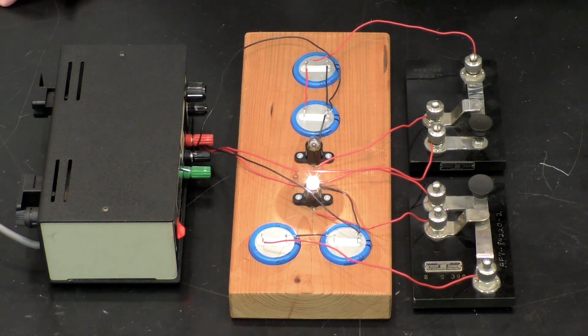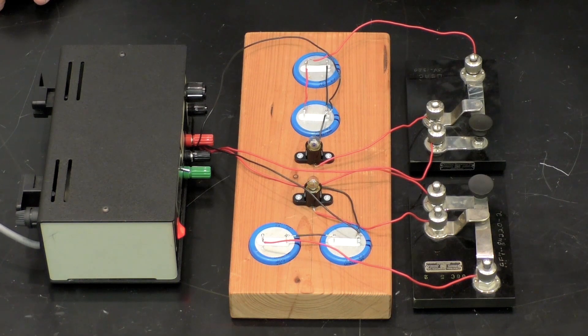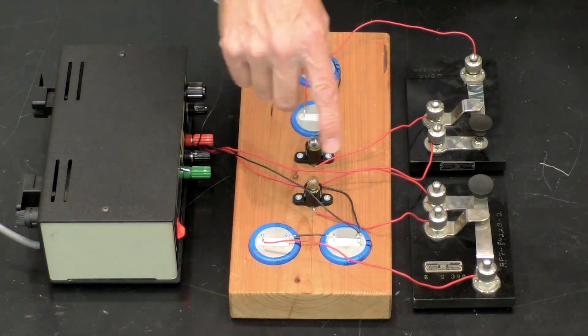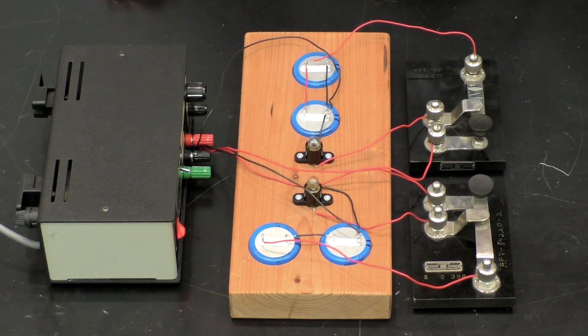Now I release this switch and allow these capacitors to discharge through this resistor. Zero, one, two, three, four. Four or five seconds or so to discharge all of that charge from the capacitors through this resistor, which is a light bulb.